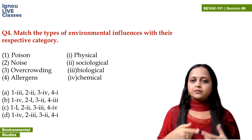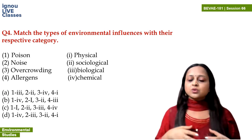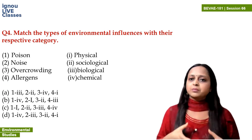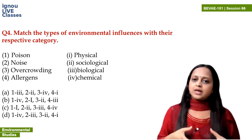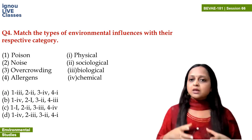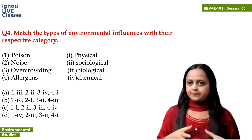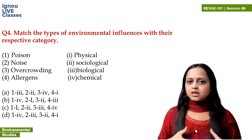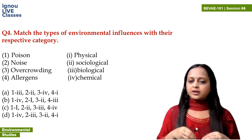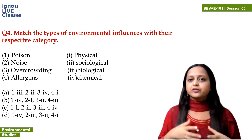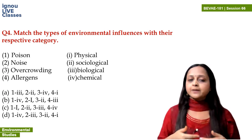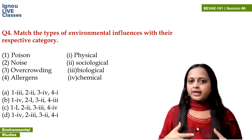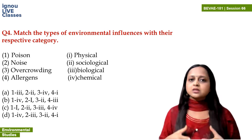Overcrowding — I will relate it with carrying capacity. Carrying capacity is the capacity of an ecosystem to hold a certain maximum number of organisms, so that all organisms can get natural resources without fighting for them. If we put more organisms than the carrying capacity into an ecosystem, they will fight for food, resources, and sunlight. So overcrowding is a sociological factor — if overcrowding happens, the ecosystem becomes imbalanced.